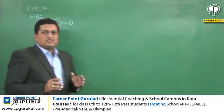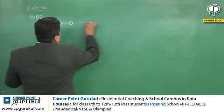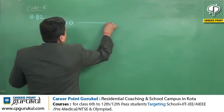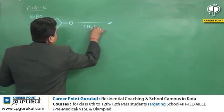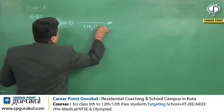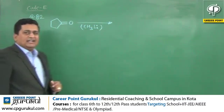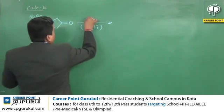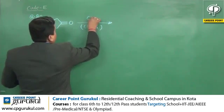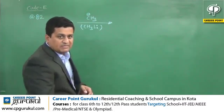Cyclopentane as a substrate is given in this question. The reagent is methyl lithium, that is CH₃Li. CH₃Li is a stronger base, and the basic or nucleophilic part is CH₃⁻.